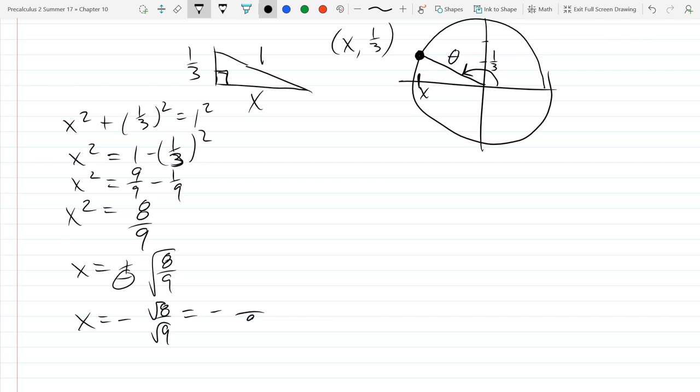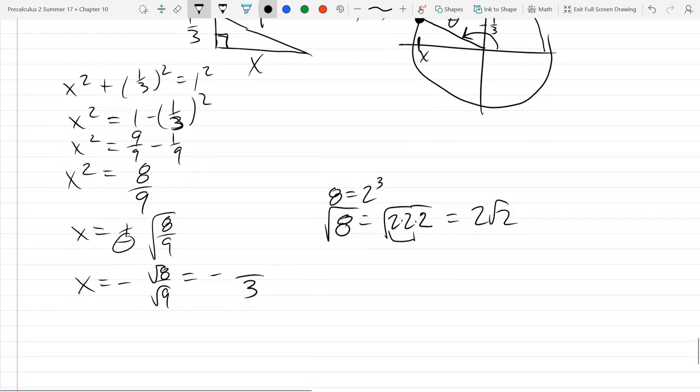So square root nine is pretty easy to write. That's just three. What about eight? Eight is two cubed, two times two times two. So square root eight is eight to the one-half power, two cubed to the half. You multiply powers here. We don't really need to get this involved. I just want to write it as two square root two. So you can basically bring out that two squared, so I write it as two square root two.